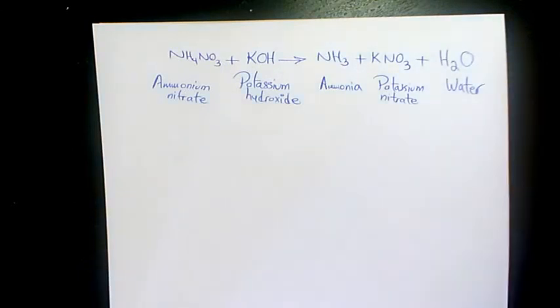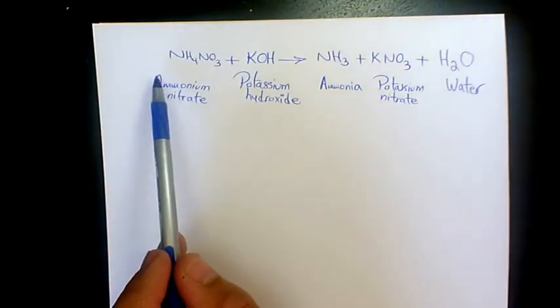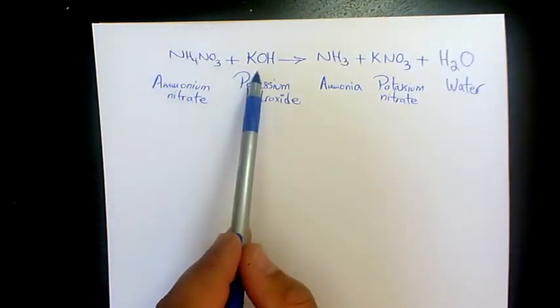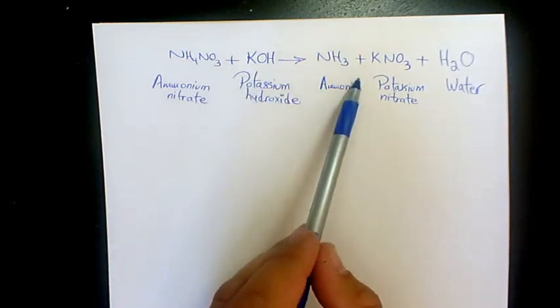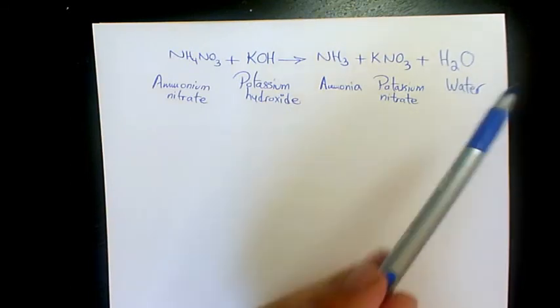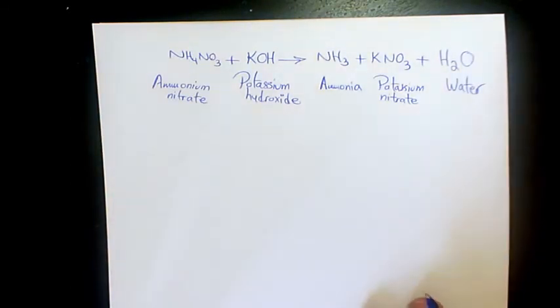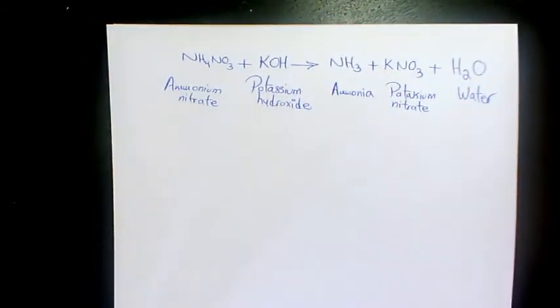So it's already balanced; we don't need to do anything. This means that for each mole of ammonium nitrate, we need one mole of potassium hydroxide to produce one mole of ammonia, one mole of potassium nitrate, and one mole of water. That's the reaction between ammonium nitrate and potassium hydroxide.